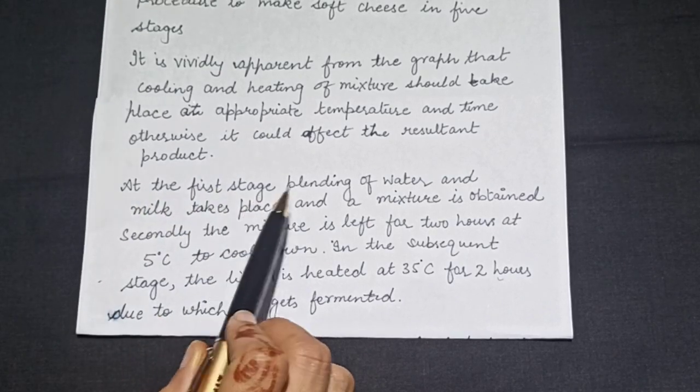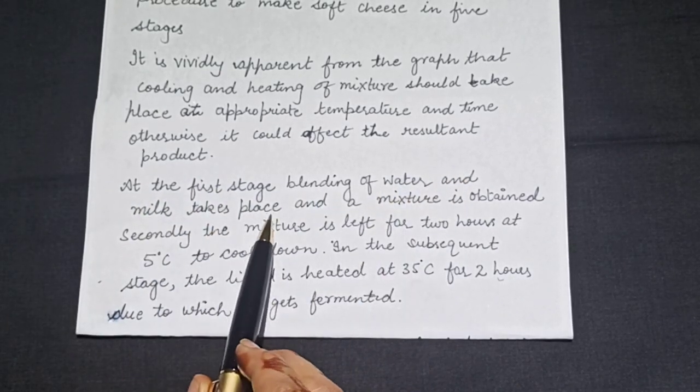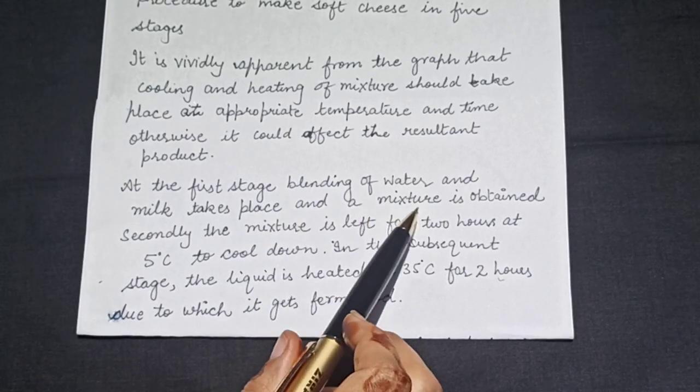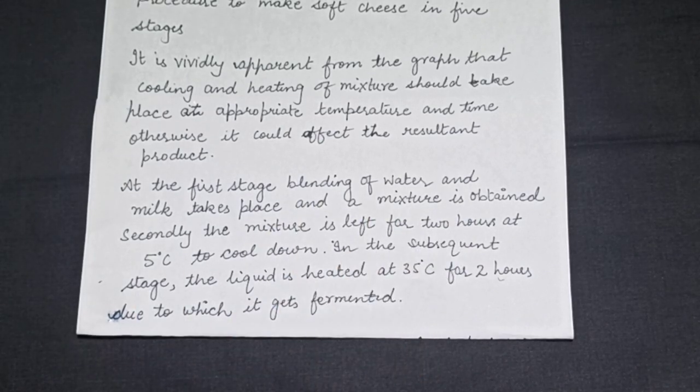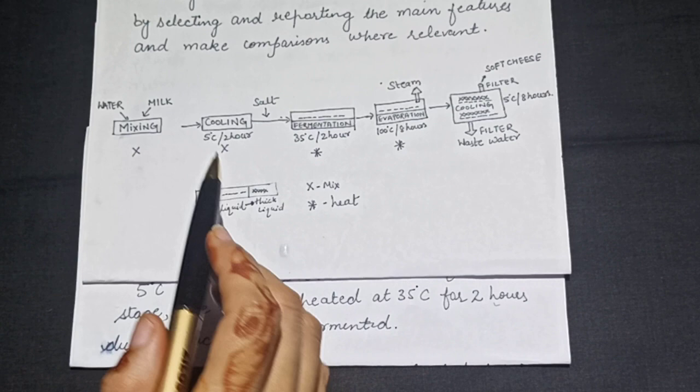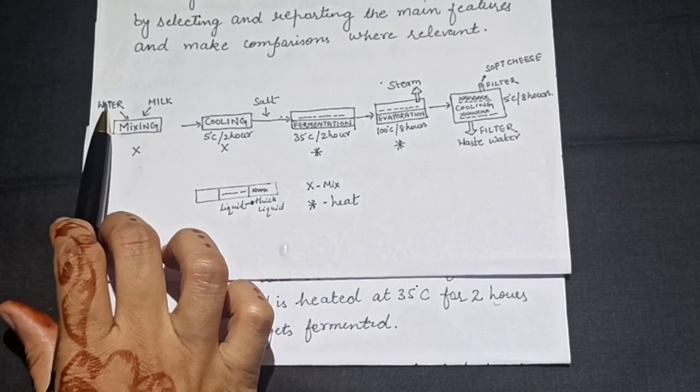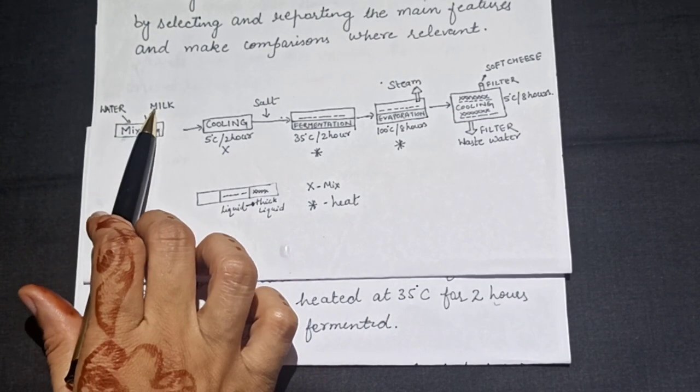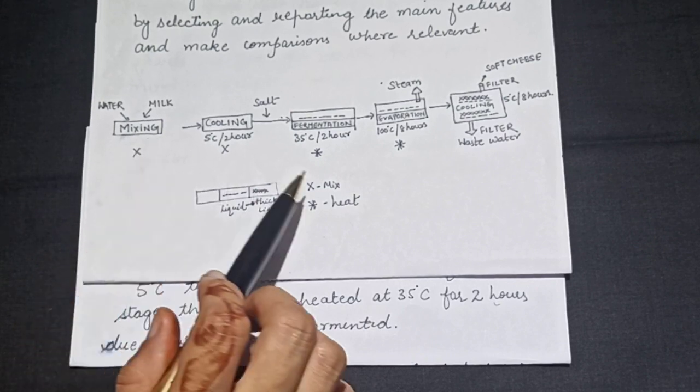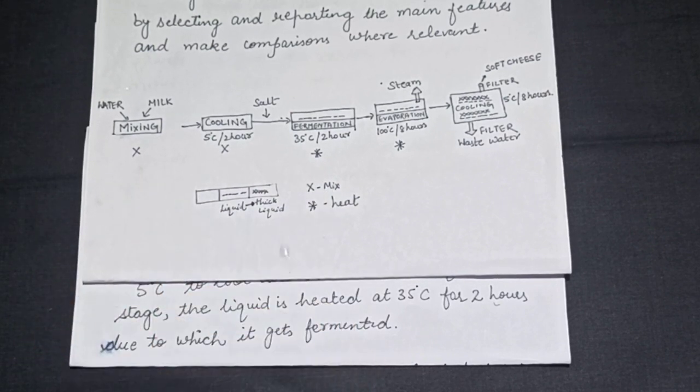At the first stage blending of water and milk takes place and a mixture is obtained. As you can see in the first stage water and milk is mixing and a mixture is obtained as the cross means mixture.